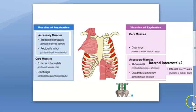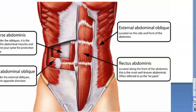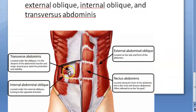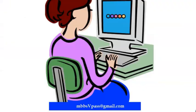Here are the abdominal muscles for reference: rectus abdominis, external abdominal oblique, internal abdominal oblique, and transverse abdominis. In this video you have learned the muscles of respiration and the accessory muscles of respiration for both inspiration and expiration.